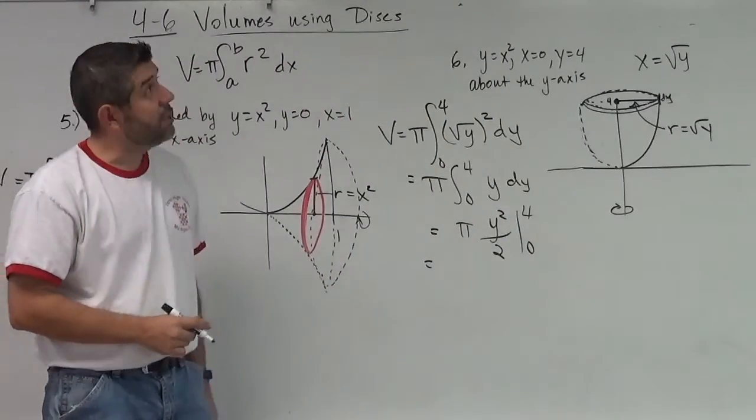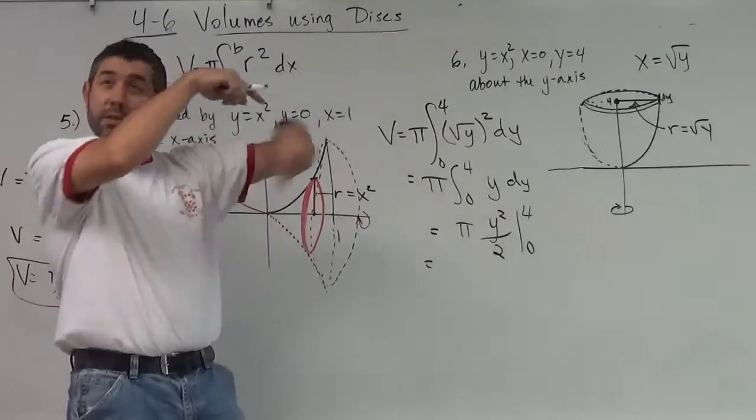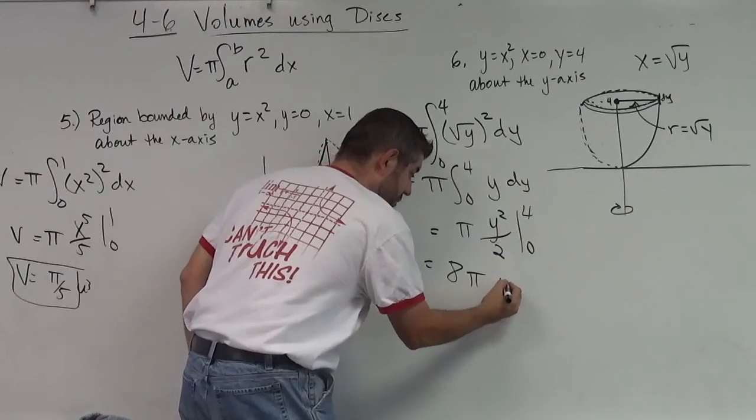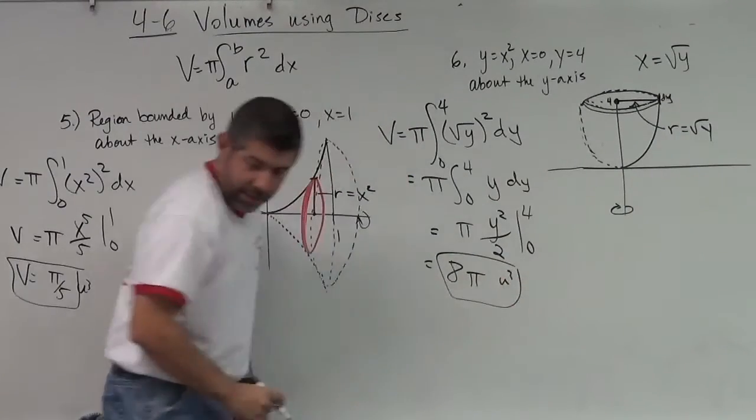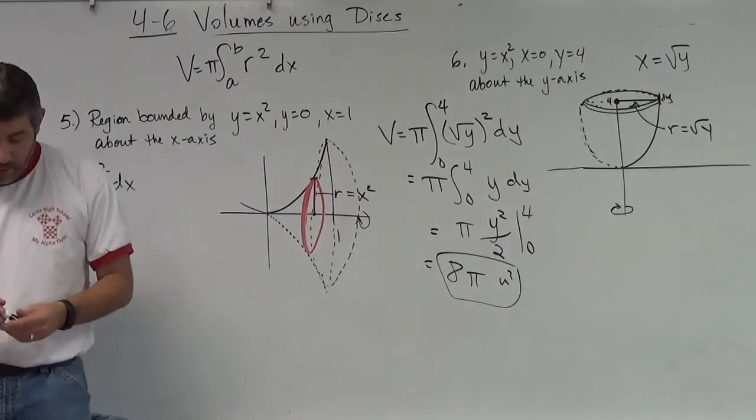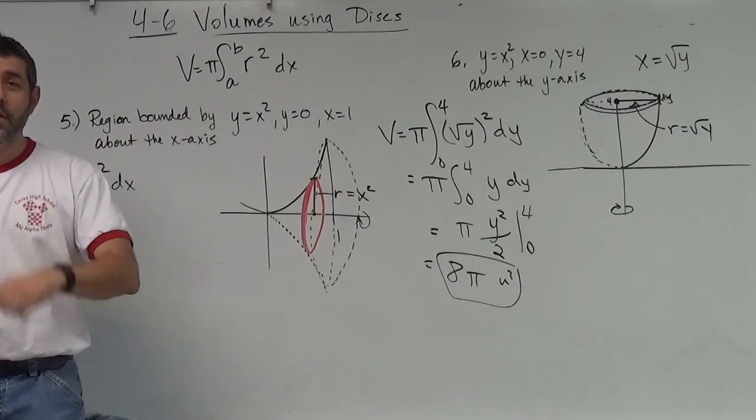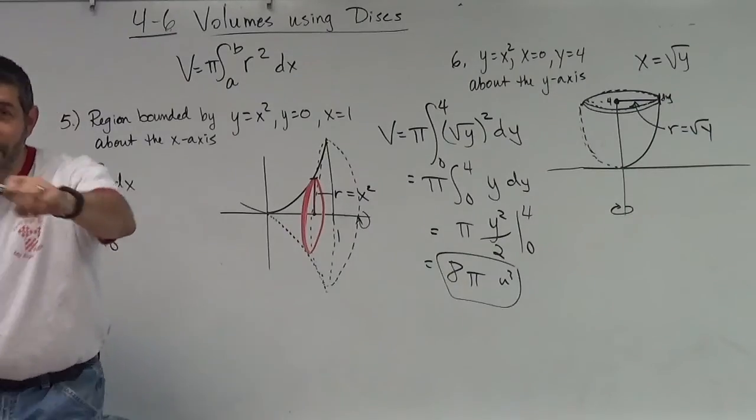Count this, it's eight, eight pi. Cubic units, I guess we can say. And there we go. Volume using discs. See you next time, guys. Maestas out.